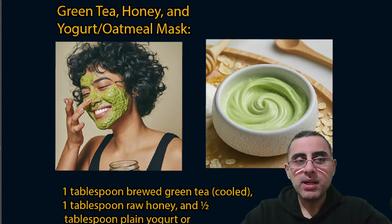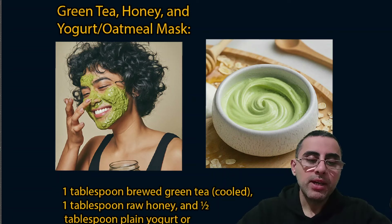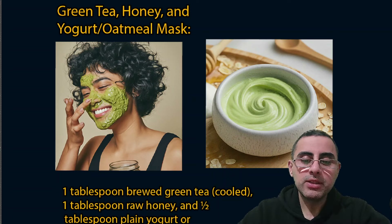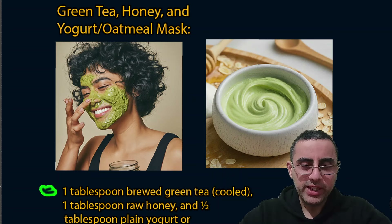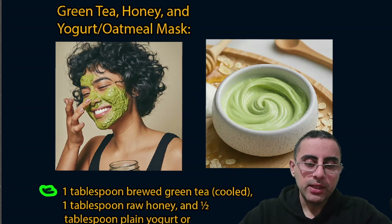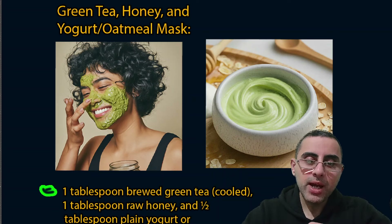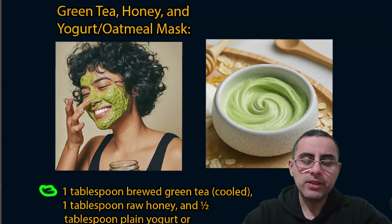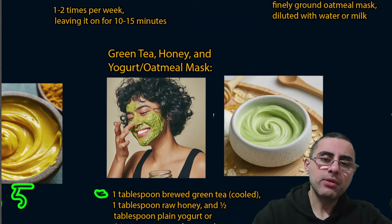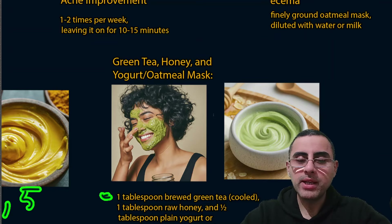Another very effective face mask combines green tea, honey, and oatmeal or yogurt. Use one tablespoon of brewed green tea (cooled), one tablespoon raw honey, and yogurt or ground oatmeal. Mix together and apply to your face. It will dry in about 15 minutes and may crack slightly — that is normal. It improves skin hydration, overall skin condition, and fine lines.